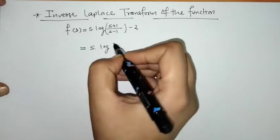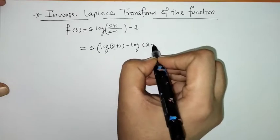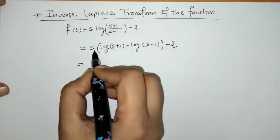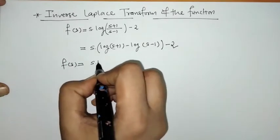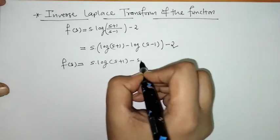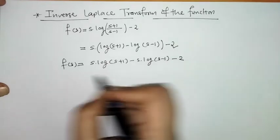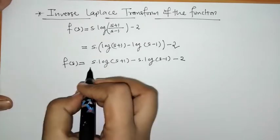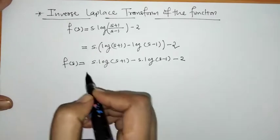By the log rule, we can write this as log(s+1) minus log(s-1). Again, we multiply s into this complete bracket, so we have s·log(s+1) minus s·log(s-1), and this minus 2 as it is. Now here we have a log function, so we have to convert this function into an algebraic function.